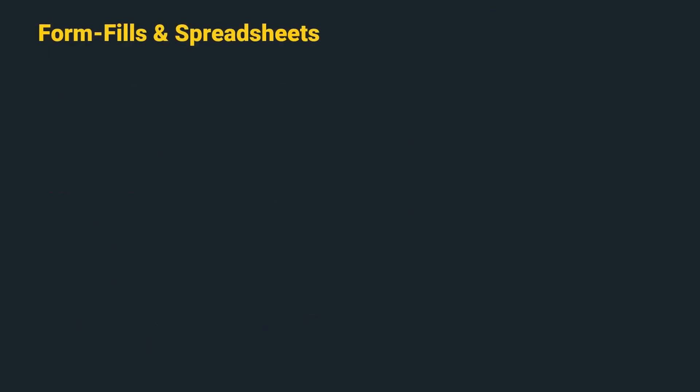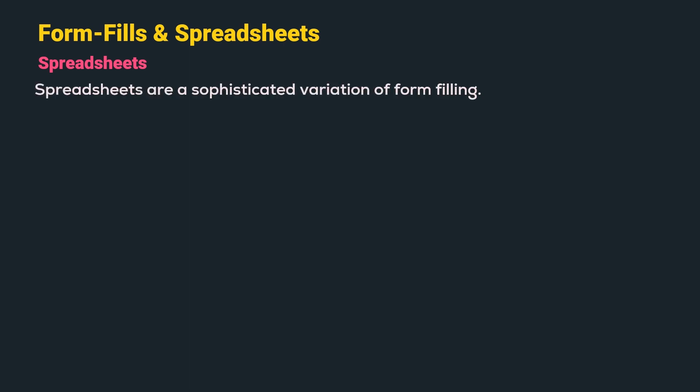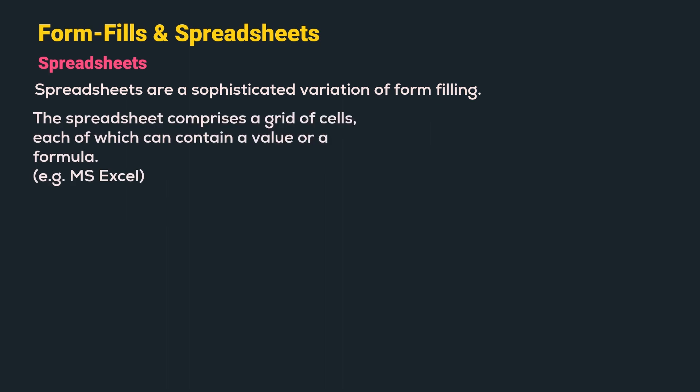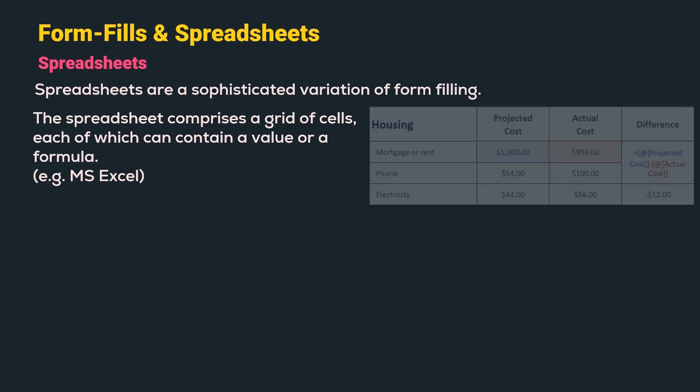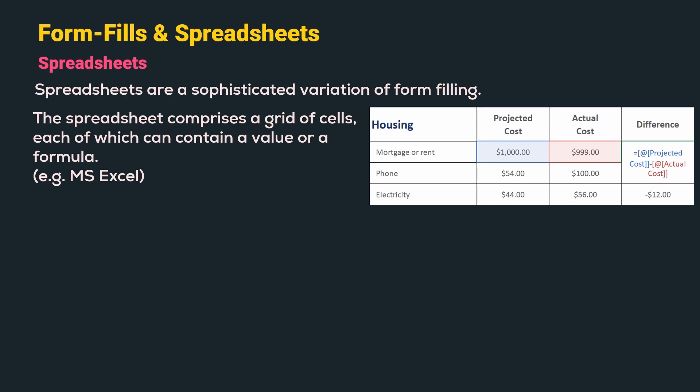The next interface style is spreadsheets. Spreadsheets are a more sophisticated variation of form filling. The spreadsheet comprises a grid of cells, each of which can contain a value or a formula. For example, Microsoft Excel. Here is an example of a spreadsheet where projected cost and actual cost contain values, whereas difference contains a formula.